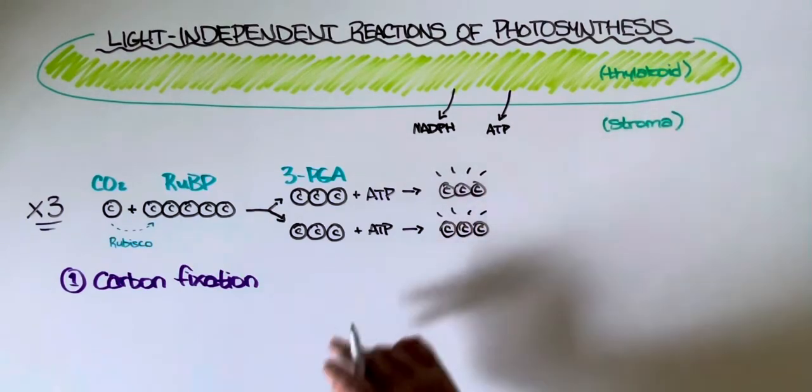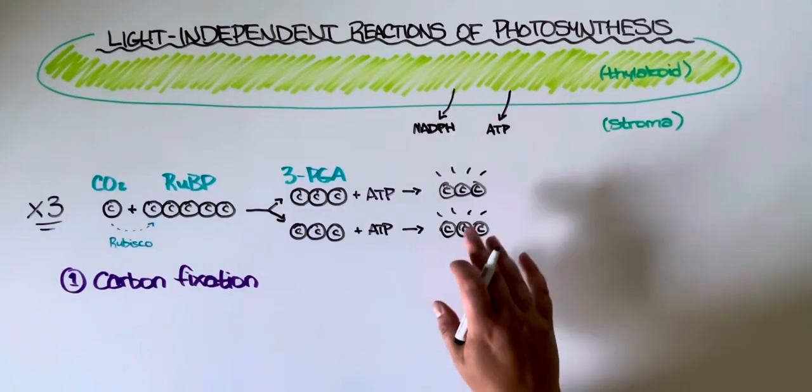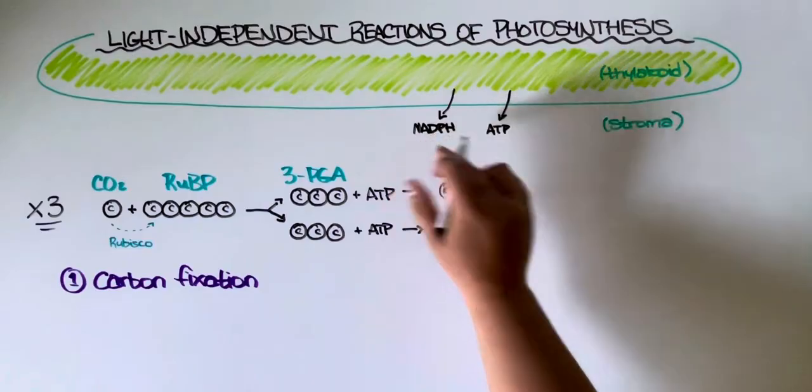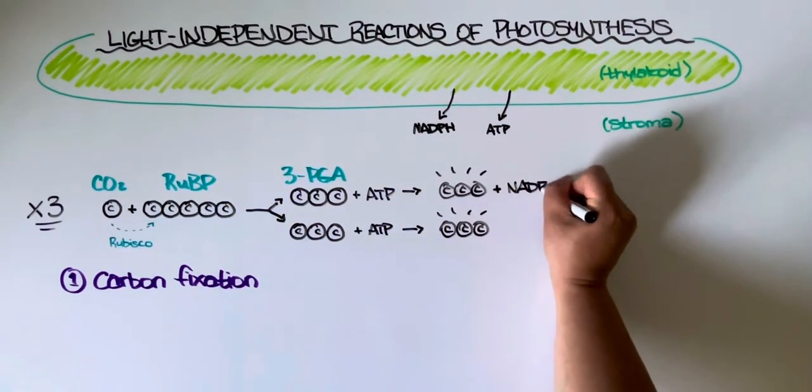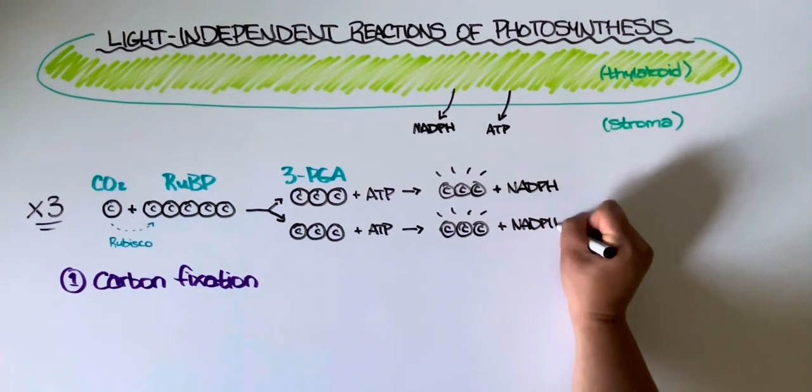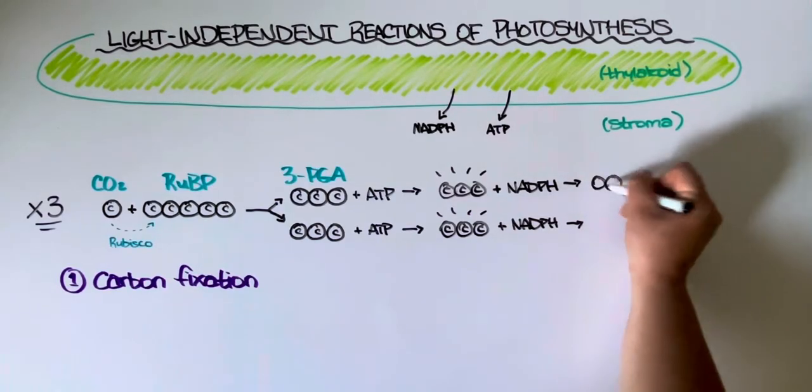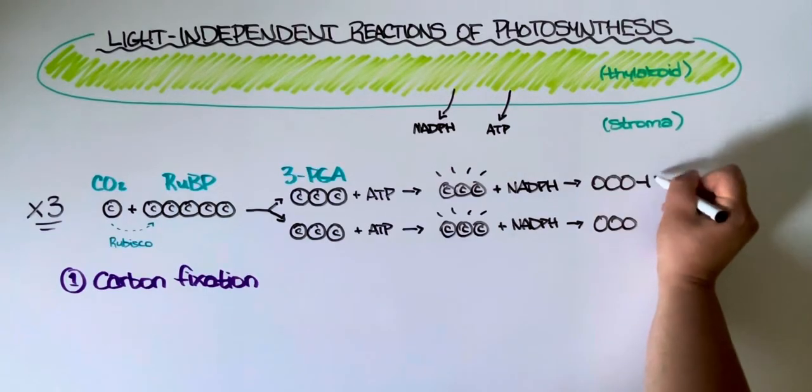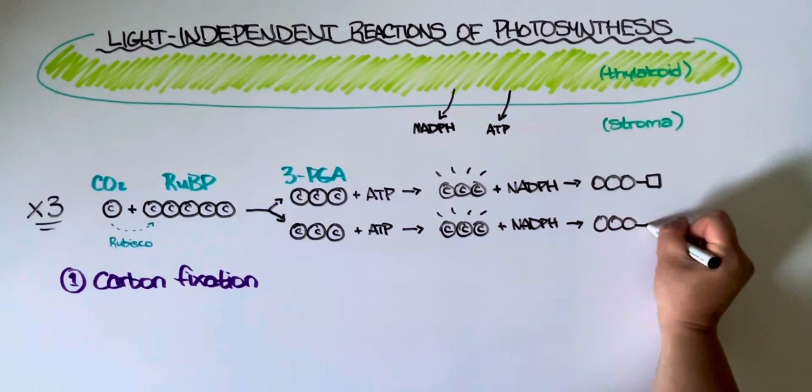We still call it 3PGA but now we can say it's been activated. Next, our activated 3PGA is then actually going to form a bond with the NADPH through a reduction reaction. Once that reaction takes place, we still have a three carbon compound but now it is bound to the NADPH, which I'll just represent using this little box.